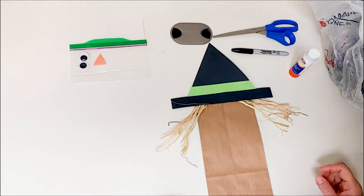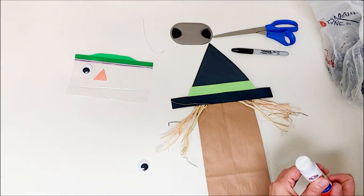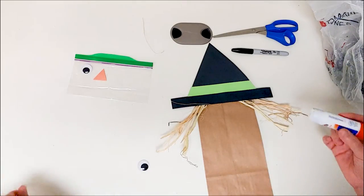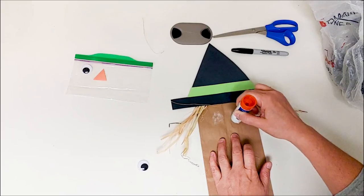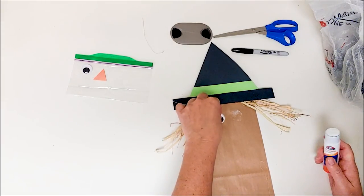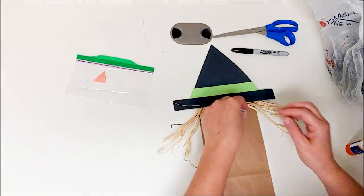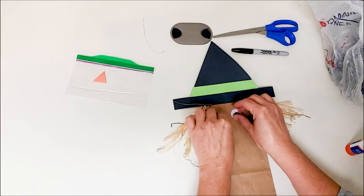So now we can put on our eyes. Okay, so I'm gonna make two glue marks where I think the eyes should go. Stick one of them on, stick the other one on, and I'm gonna press them down a little bit to make sure that they don't fall off.